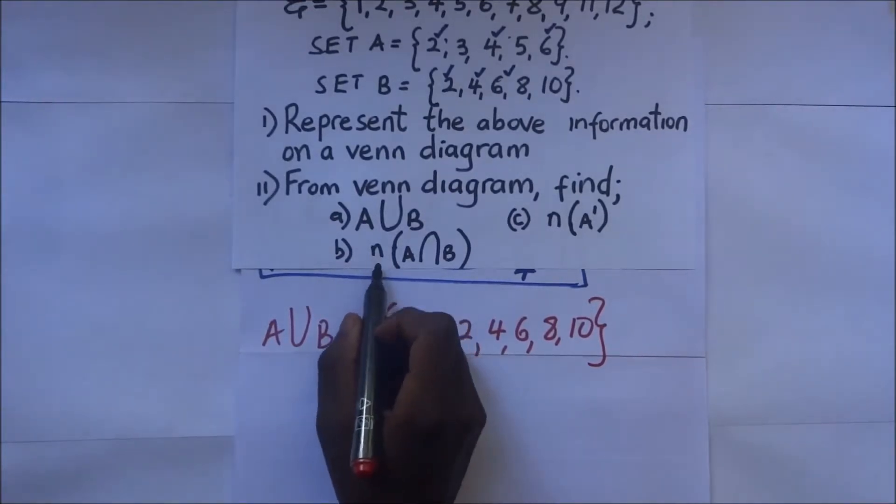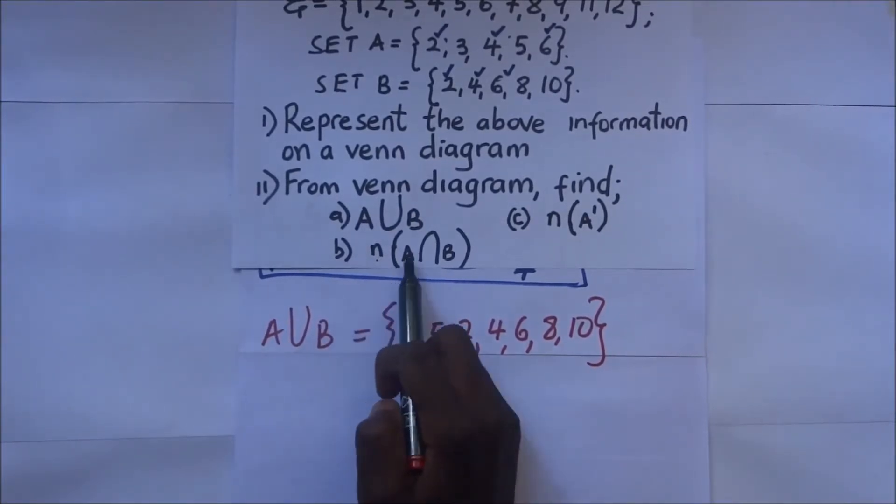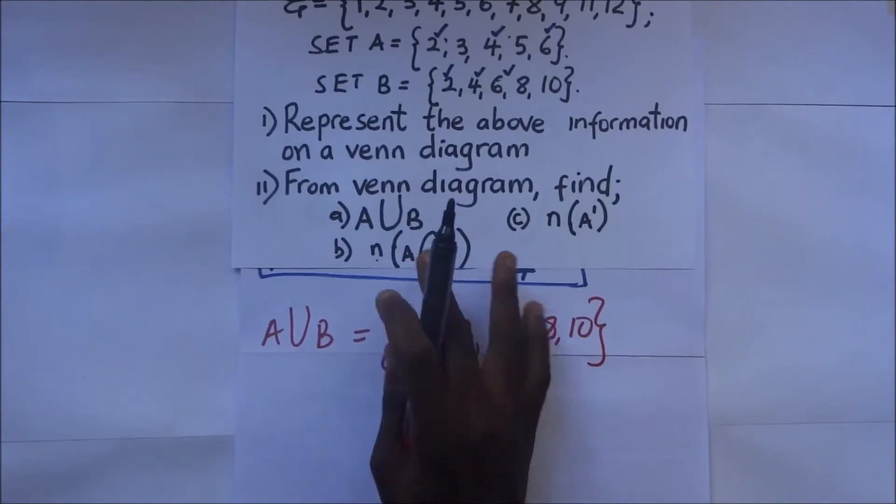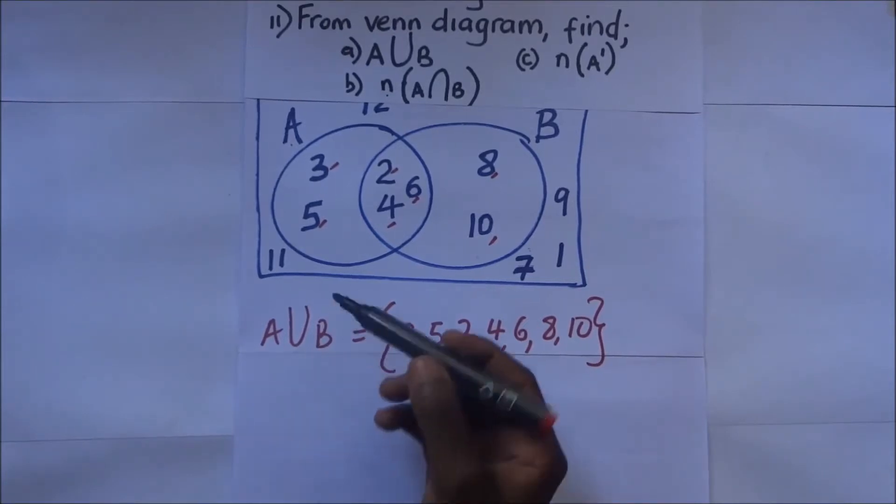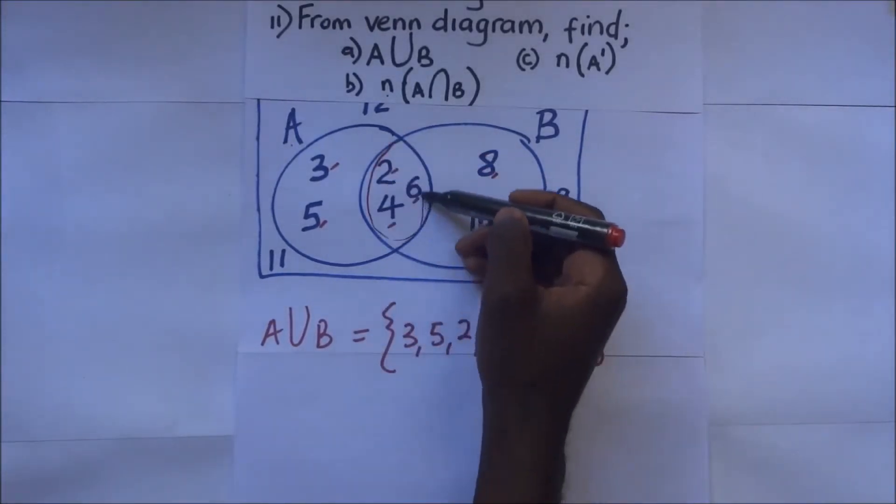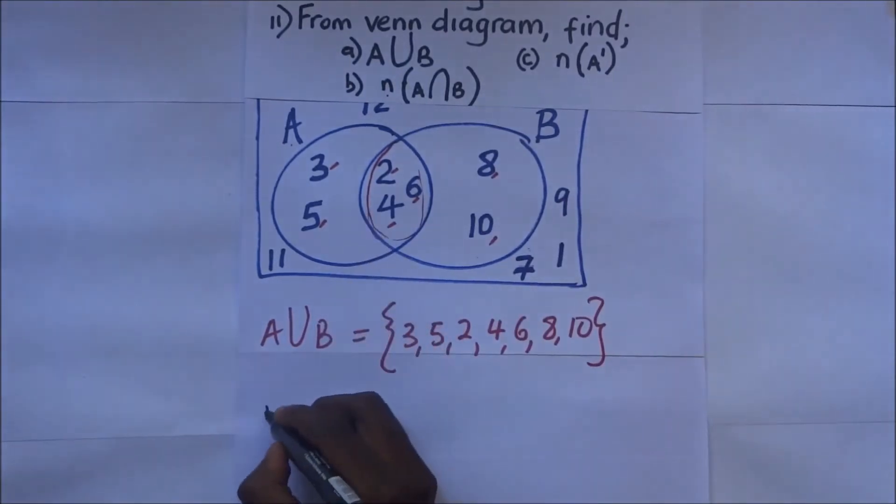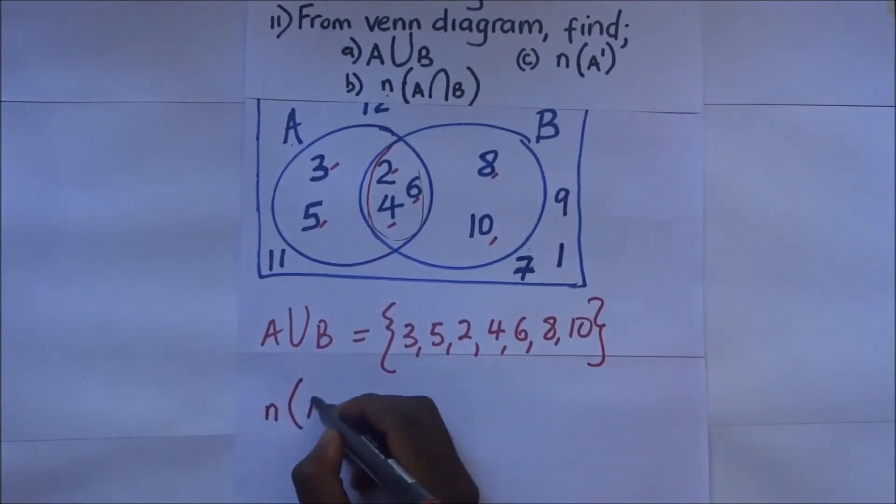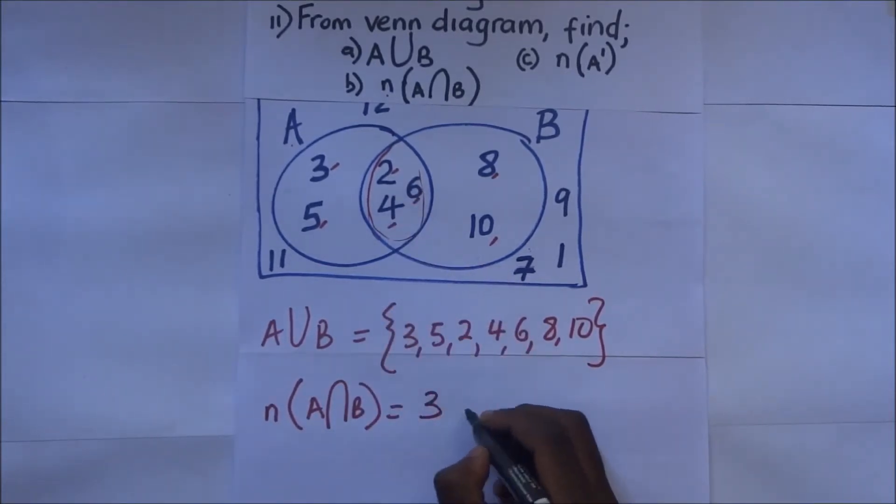Part B is telling us to find n(A∩B). This notation means they are asking us to find the number of members in A intersection B. Intersection means the members that are shared between two sets. The members in the intersection are here. The number of members in A intersection B are 1, 2, 3 - there are 3 members.